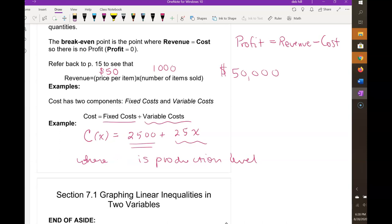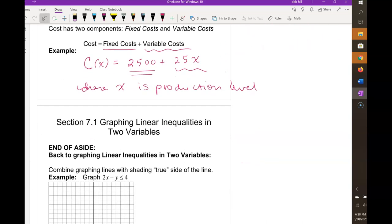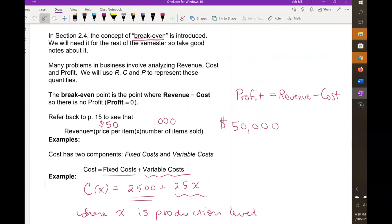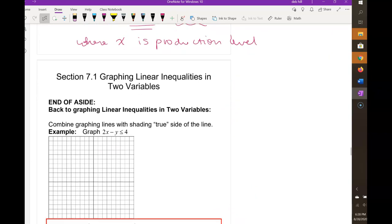When I say production level, I mean I'm making 1,000 pairs of tennis shoes per month or I'm making 10,000 jars of salsa each week. So production level is a quick way of saying how many are you making. We do kind of a simplification in business math where we're assuming you sell everything you make, so production level and sales are the same. That's not the real world, but it simplifies things so you can study the concepts. Then in your upper division classes you can get more complex. That was the end of the little aside, super important section 2.4 concepts that we'll need going forward.